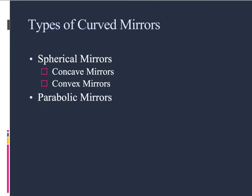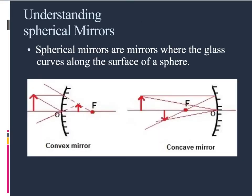There are essentially three types of curved mirrors: spherical mirrors, which have two types — concave and convex — and parabolic mirrors. Spherical mirrors are mirrors where the glass curves along the surface of a sphere. On a concave mirror, the inside is the reflective surface — the lines on the outside indicate the non-reflecting side. On a convex mirror, it's the opposite: the outside is shiny and reflective, and the markings on the inside indicate the non-reflecting side.